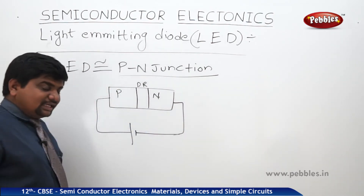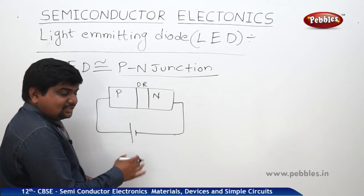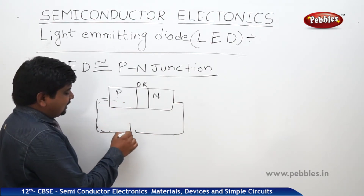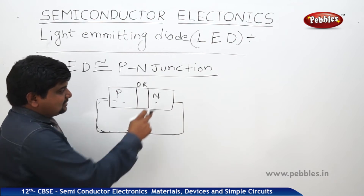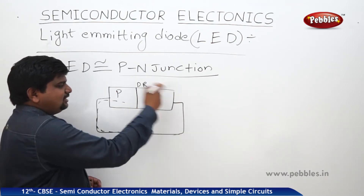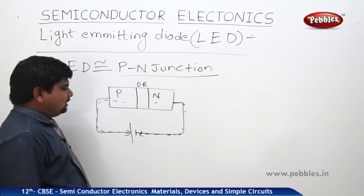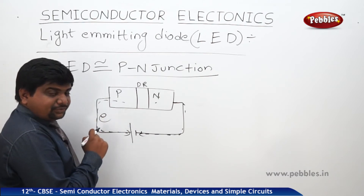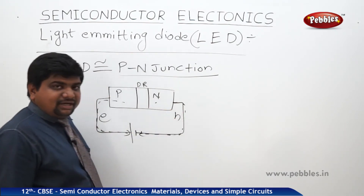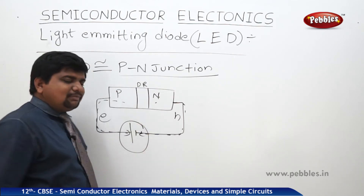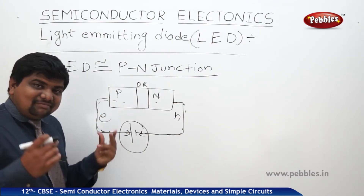In the forward bias condition, the positive holes and the positive terminal of the battery repel each other, which is why electrons will come and attract here. In the negative side, electrons are the majority charge carriers in the N side, so these negatives will repel each other — that is why electrons will come here. The holes will come here. Because of the applied potential battery in the forward bias condition, the minority charge carriers are recombining with each other.